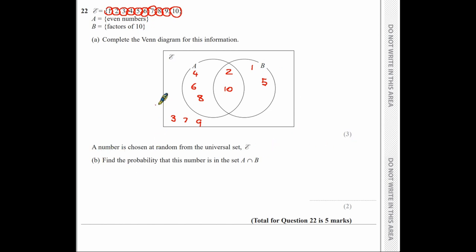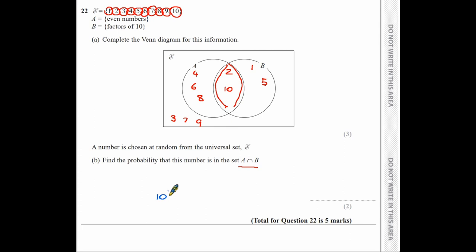For part B: choose a number at random. What is the probability it is in the set A intersect B — i.e., in the centre area? There are 10 numbers altogether, and 2 of them are in the intersection (2 and 10). So the probability is 2 out of 10, which simplifies to one-fifth.